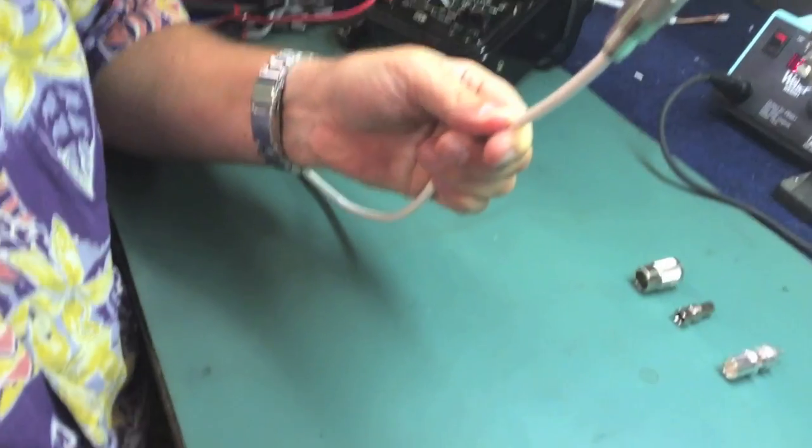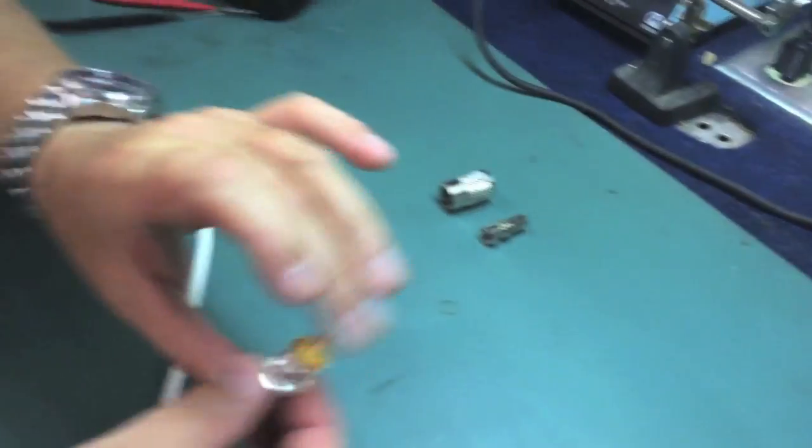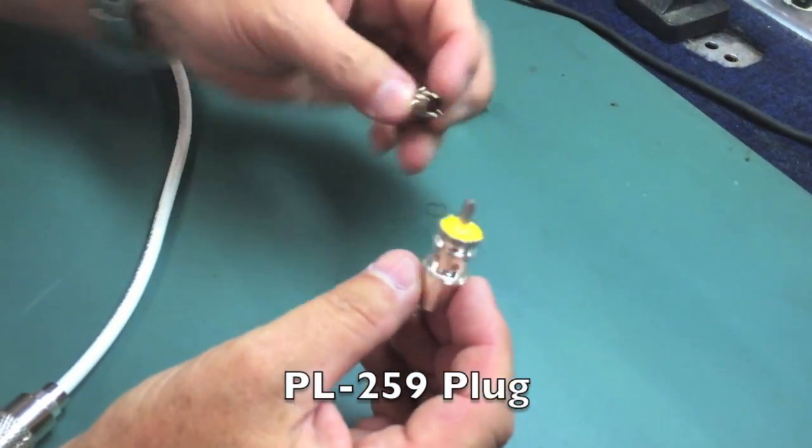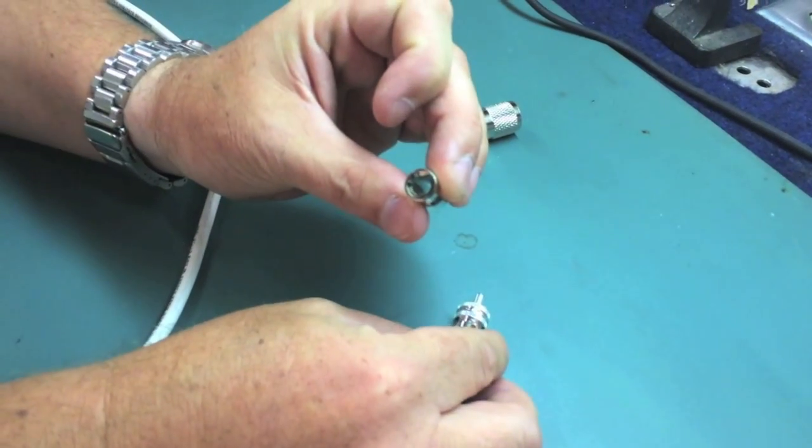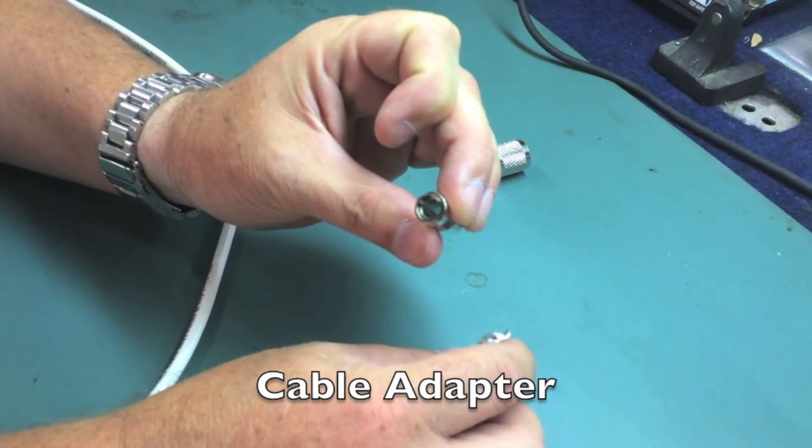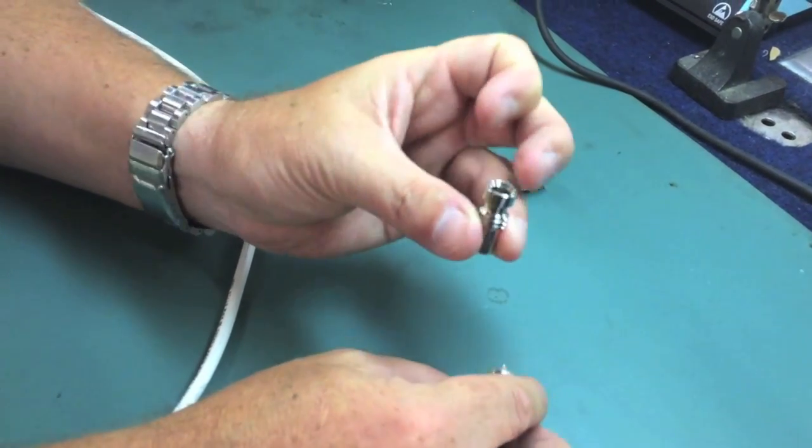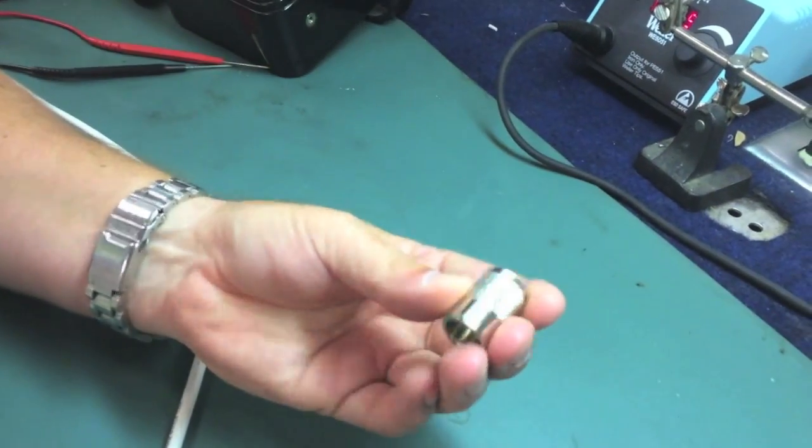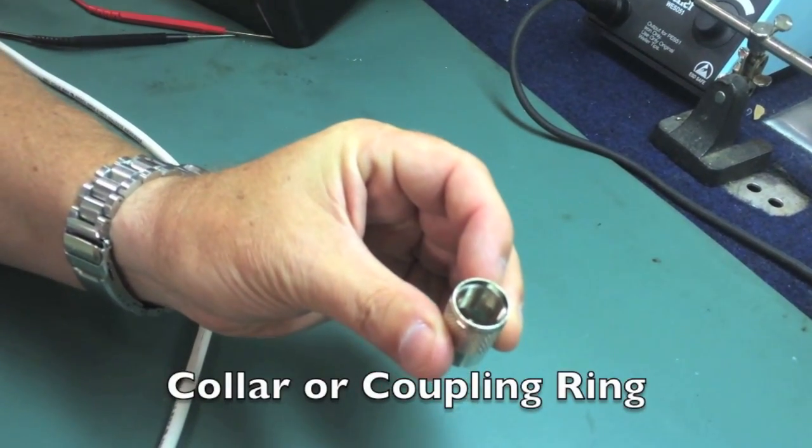I'm going to take you through the different parts. This is the end part that goes on the end of the cable. This is an adapter to adapt to different types of cables, examples like RG213, RG8X, RG59. This is actually for RG8X. This is the collar that secures the connector to the back of the radio.